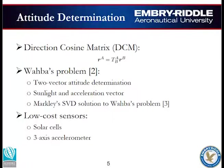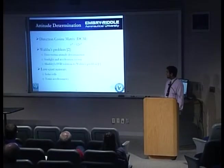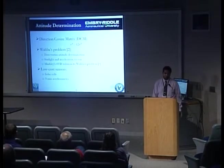The attitude determination system proposed here is parameterized in the form of a DCM, or direction cosine matrix. This equation describes what a DCM represents: if we have vector measurements in body frame B, we can use the DCM to obtain vector measurements in inertial frame A. We use Wahba's problem with two-vector attitude determination between the sunlight vector and the gravity vector, gathering these using solar cells and a three-axis accelerometer, then solving with Markley's SVD solution.